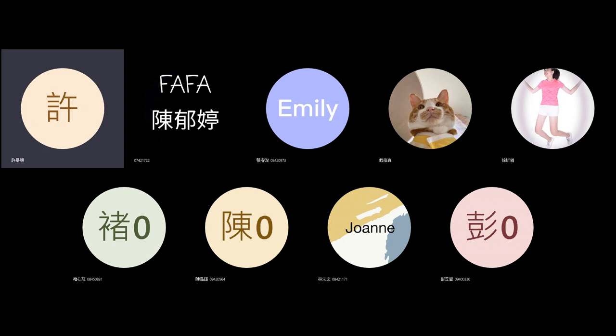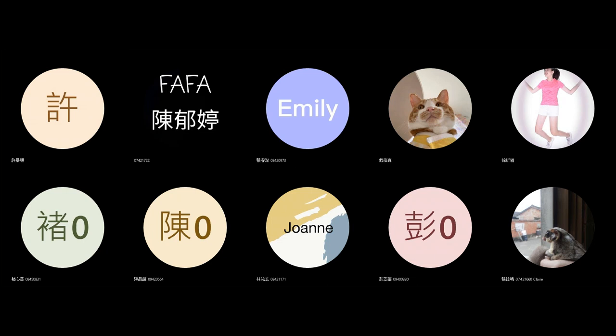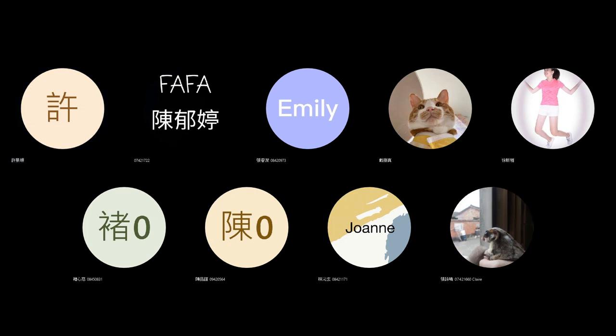Whether it's in the real world or in a story world, when we talk about technology, we're usually talking about technological change. It doesn't really matter the specific technology a character uses. What matters is how technology changes over time and how those changes change human experience. We can think about the effects of technological change from three perspectives: time, space, and knowledge.